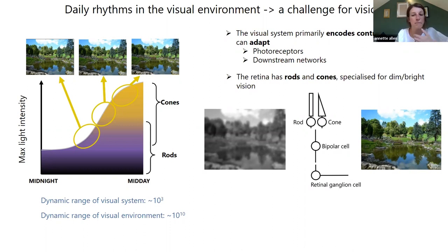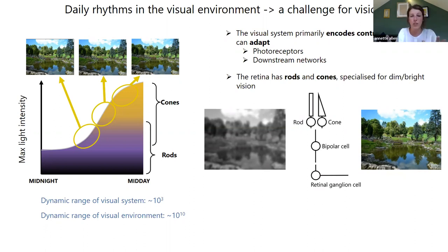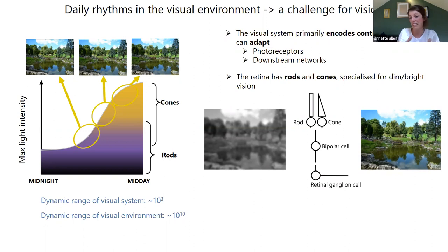Rods and cones are each specialised in different ways for vision in different light environments. Rod vision prioritises sensitivity above all else — rod photoreceptors are highly sensitive, but they saturate at relatively modest intensities, and often this comes at the loss of spatial resolution. Cones, on the other hand, are much less sensitive but they're able to efficiently adapt and can provide high acuity or colour vision. So we have these two types of photoreceptors providing quite different types of visual information in terms of sensitivity range and also temporal and spatial information. Using rods or cones in the wrong light environment would lead to quite poor vision.